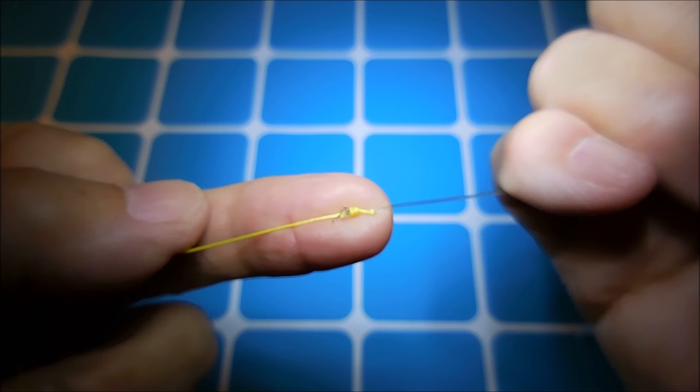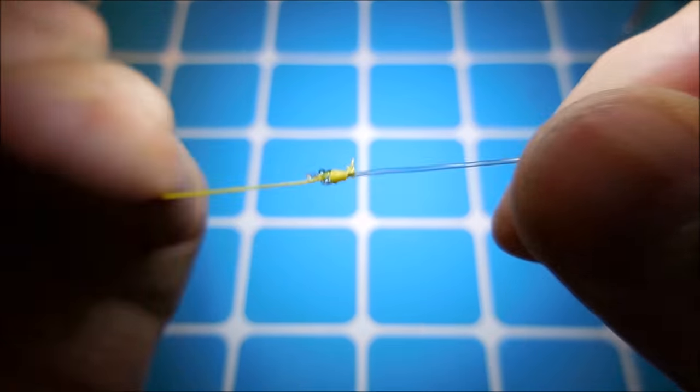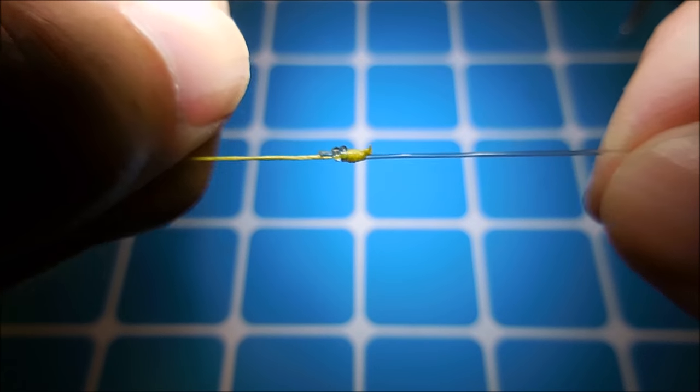I like this knot over the uni to uni because of its size and knot strength. And I prefer this knot over the Albright as the tag end has an inline flow with the mono.